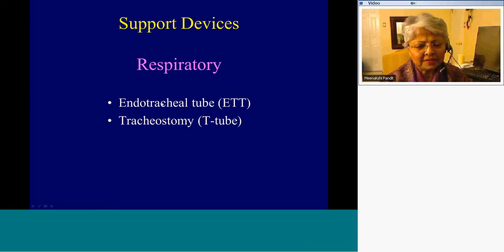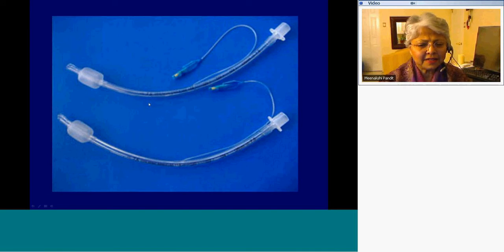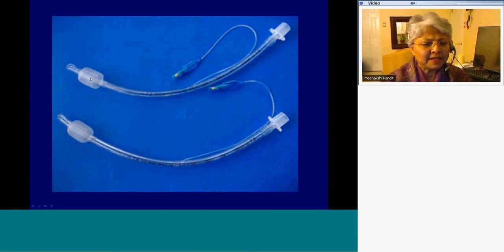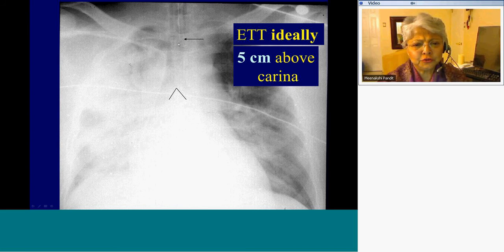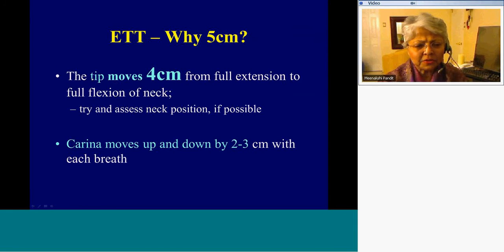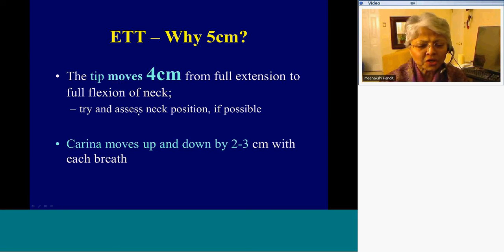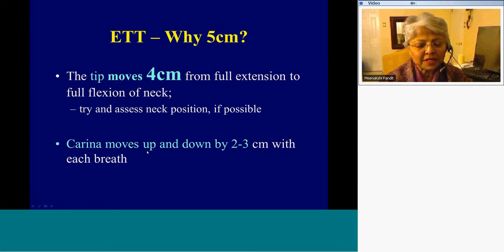Two respiratory devices I will discuss are endotracheal tubes and tracheostomy tubes. An endotracheal tube looks much like a Foley catheter — it has a retention cuff at its end and is somewhat more rigid. A properly positioned endotracheal tube should be five centimeters above the carina. The tip of the endotracheal tube moves four centimeters from full extension to full flexion of the neck, so always try to assess neck position if possible, and remember that the carina moves up and down approximately two to three centimeters with each breath.